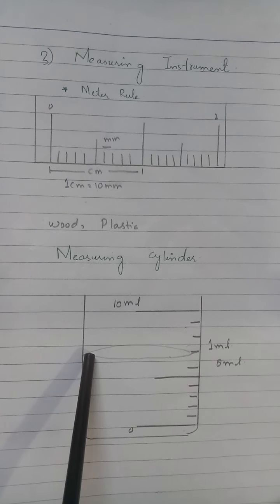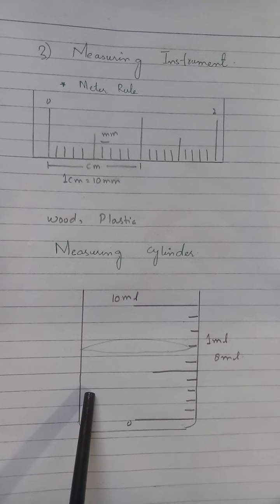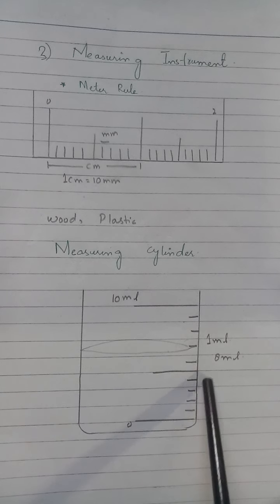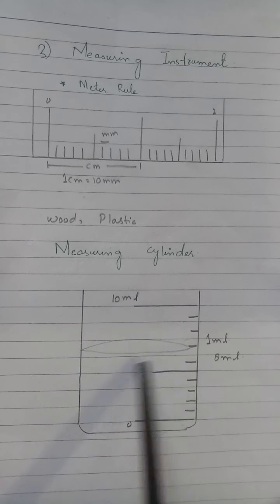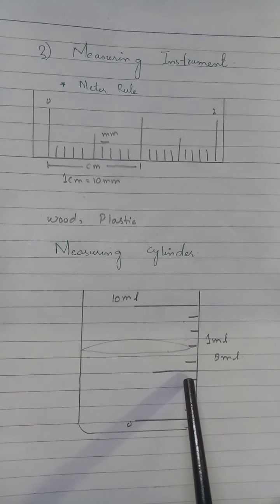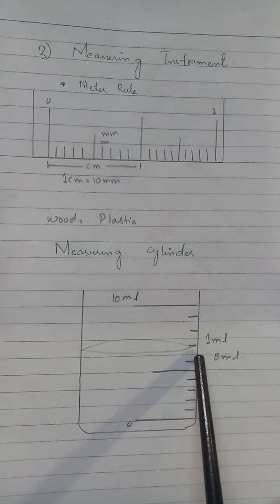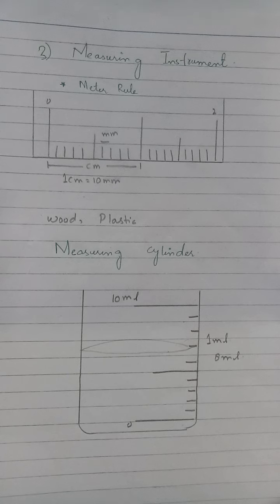The second measuring instrument we studied was the measuring cylinder, used to measure liquids. It also has two small lines equal to one millimeter. We filled a liquid inside it and observed that when counted, the liquid came up to eight, meaning the reading was eight milliliters of liquid.